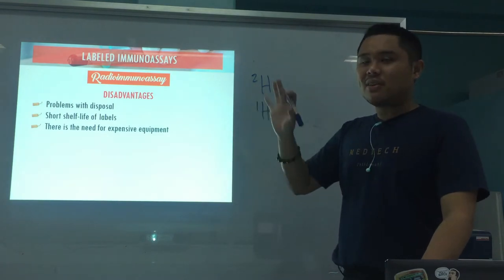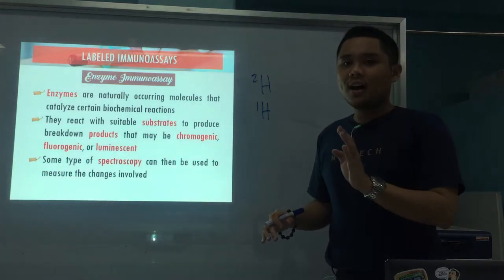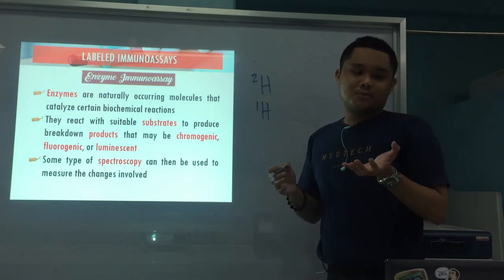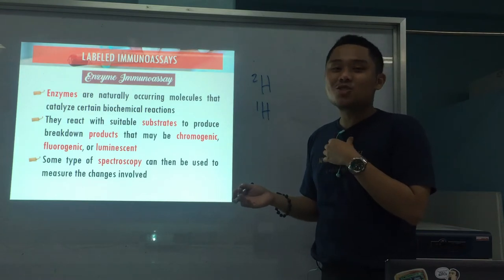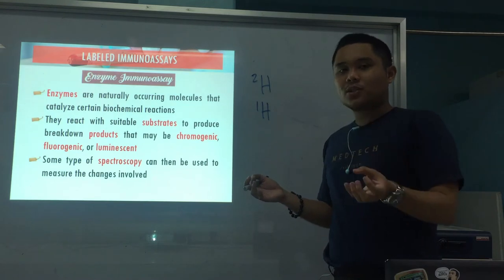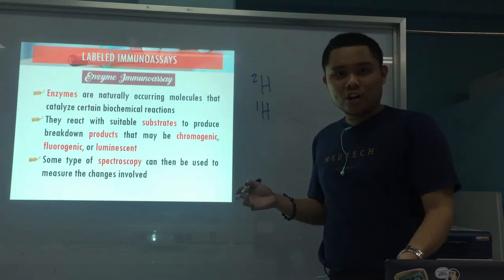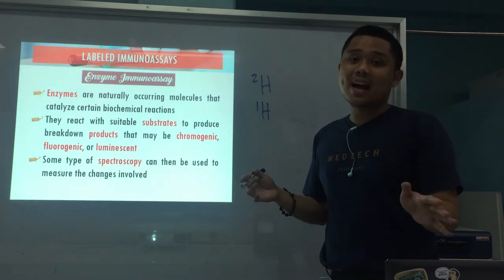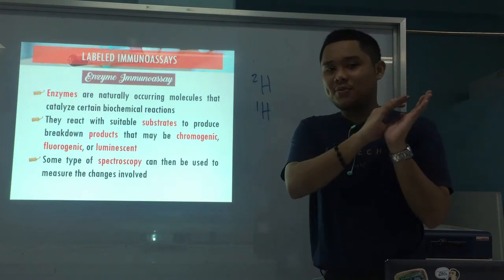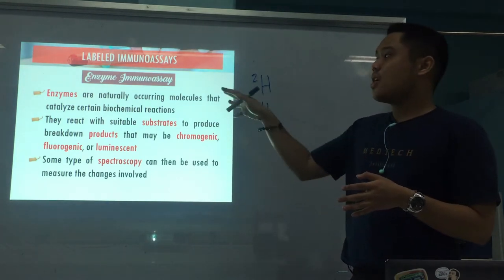Since these are the disadvantages of radio immunoassays, most laboratories are now going towards enzyme immunoassay. Enzymes are naturally occurring, can be found in nature, in animals and plants — they're much more convenient and easy to acquire. They are also cheap and low-cost, and do not present much of a health hazard. Because of the limitations of RIA, scientists have formulated another type of labeled immunoassay using enzymes.